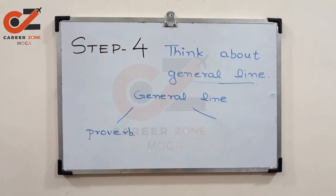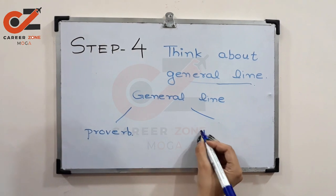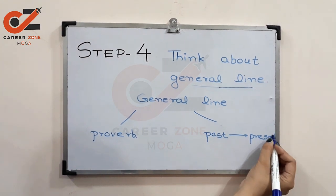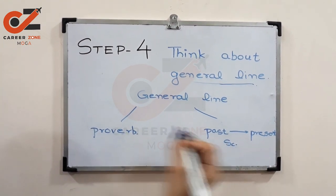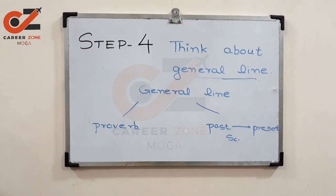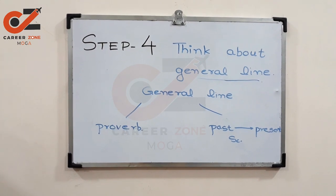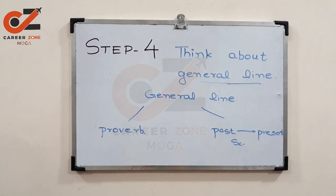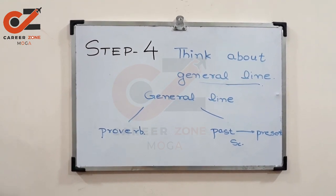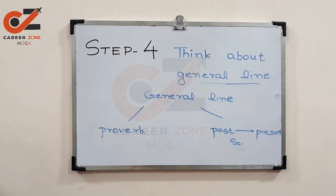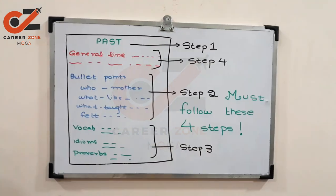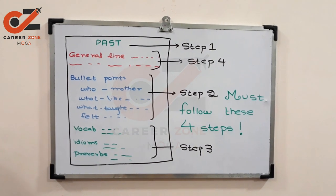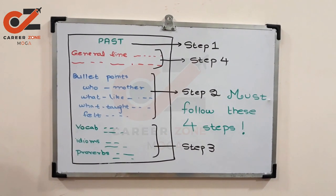The second way is to describe the past-to-present scenario. For instance, if your cue card asks you to describe an interesting conversation, you can mention that in former times people used to converse with each other face to face. On the contrary, the trend has completely changed and now people prefer social media in order to interact with each other. Thanks for watching — if you want to score more than seven in speaking, you must follow these four steps.